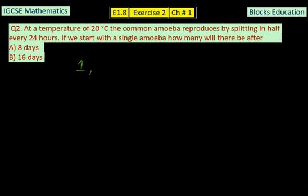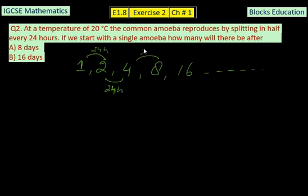Let's suppose we're starting with one amoeba. After 24 hours it will be 2, and then after 24 hours, because these two amoeba will split themselves, so after another 24 hours they will be 4, then they will be 8, and they will be 16, and so on. The gap between them is 24 hours, the gap between two intervals is 24 hours.